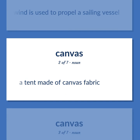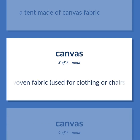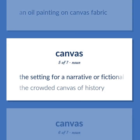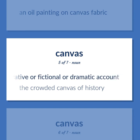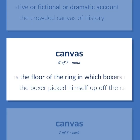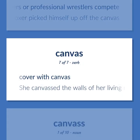Canvas. A tent made of canvas fabric. A heavy, closely woven fabric, used for clothing or chairs or sails or tents. An oil painting on canvas fabric. The setting for a narrative or fictional or dramatic account — the crowded canvas of history. The map that forms the floor of the ring in which boxers or professional wrestlers compete — the boxer picked himself up off the canvas. Cover with canvas — she canvassed the walls of her living room so as to conceal the ugly cracks.